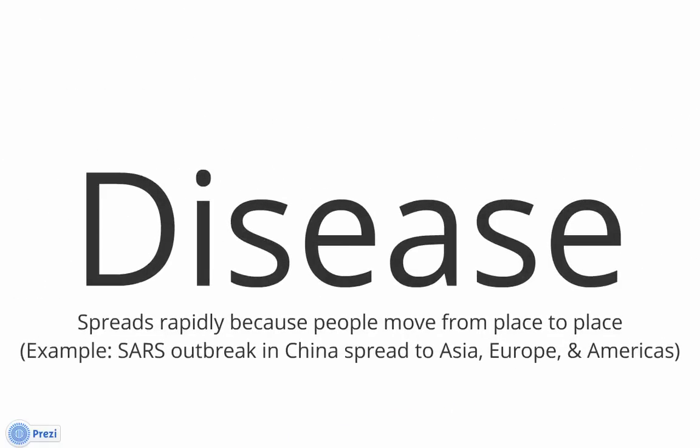Another global challenge is disease. Disease spreads rapidly because people move from place to place — for example, people flying internationally. When the SARS outbreak occurred in China, it spread to Asia, Europe, and the Americas because people were traveling back and forth carrying SARS. Many diseases have their largest impact on local and regional levels, but globalization and traveling has made controlling disease a challenge for the entire world.